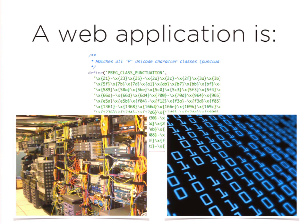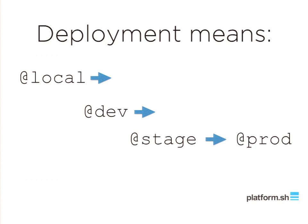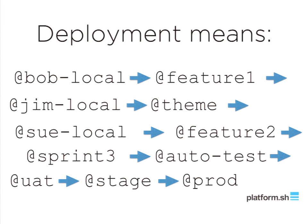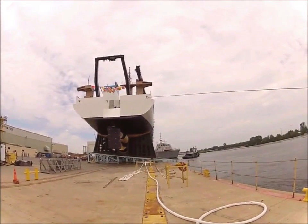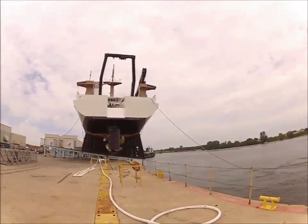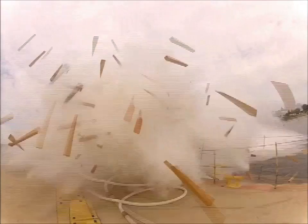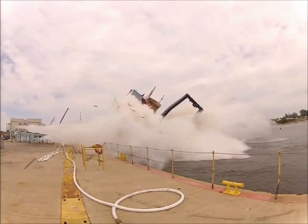If you don't have all three of those in one specific state that is known to work, you have an unholy mess of a broken application. Deployment also means moving those things — code, data, and infrastructure — between your local environment, dev, stage, and prod. We're all familiar with these concepts of moving the application through stages towards deployment. But in reality it's not just dev, stage, prod — it's more complex than that. Depending on how many developers you have, it becomes exponentially more complicated.